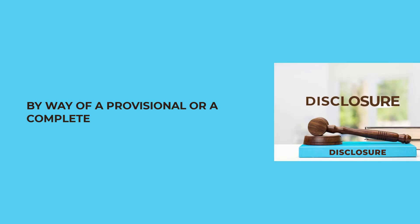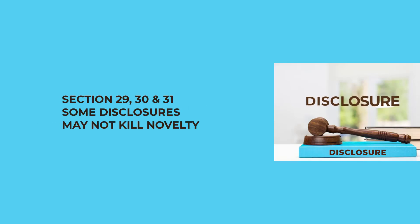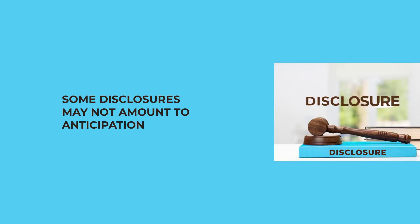You have to make the disclosure by way of a provisional or a complete specification. There are certain cases — we will see it in sections 29, 30, and 31 — where some disclosures may not kill your novelty, or in other words, may not amount to anticipation. Certain disclosures will not kill priority.